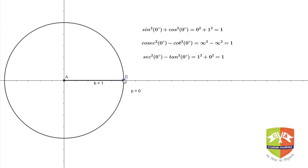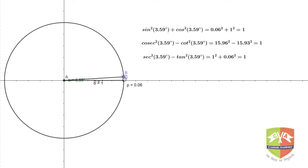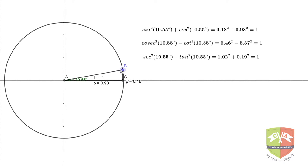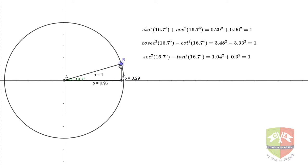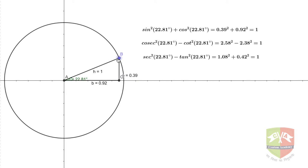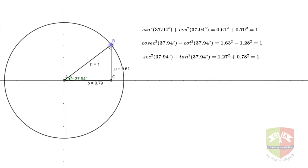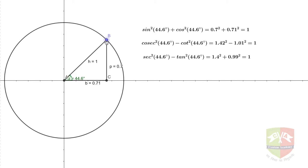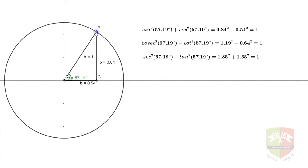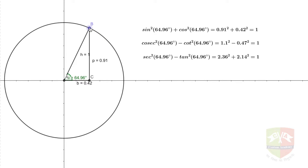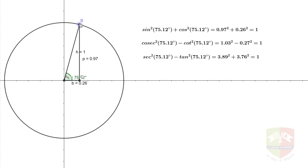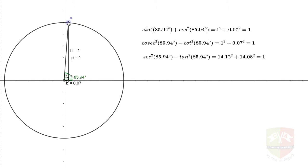Now I am going to increase the value of theta. You can see the theta value is changing but the identity remains the same — the sum of the two terms is not going to change. As I increase the theta value, there is no impact on the right-hand side; it is always one. Though the individual terms are changing, the total sum of the two terms is always one.